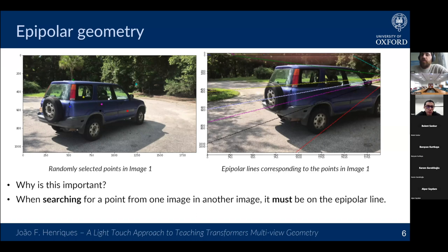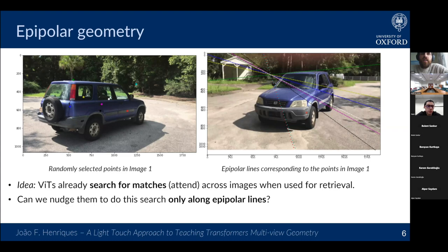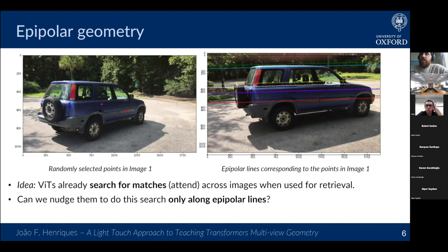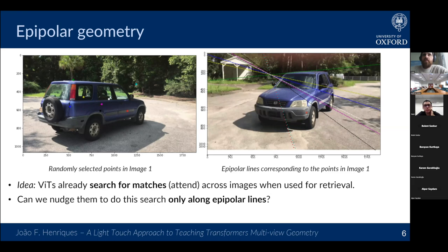Here's a visualization: colored points on the left image each have a corresponding epipolar line on the right image — that's the line where you would search for that point in 3D, given the known camera pose. You're not supposed to search everywhere; it will surely be along this line. Connecting this to VITs: they already search for matches when they attend across images. The attention operation is essentially a small local search, so the idea is to ask: can we nudge them to search only along epipolar lines?